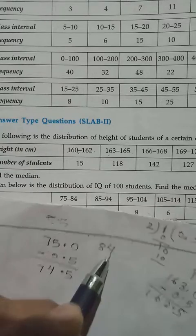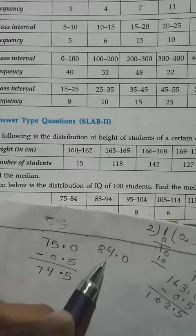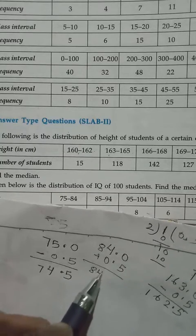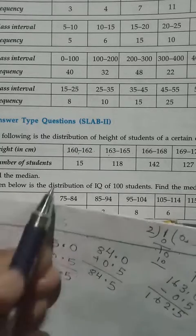Then upper limit, we have to plus. 84.0 plus 0.5. So we have 84.5.